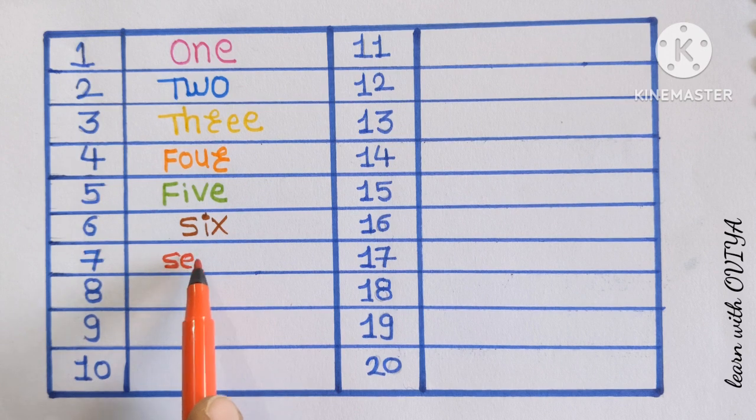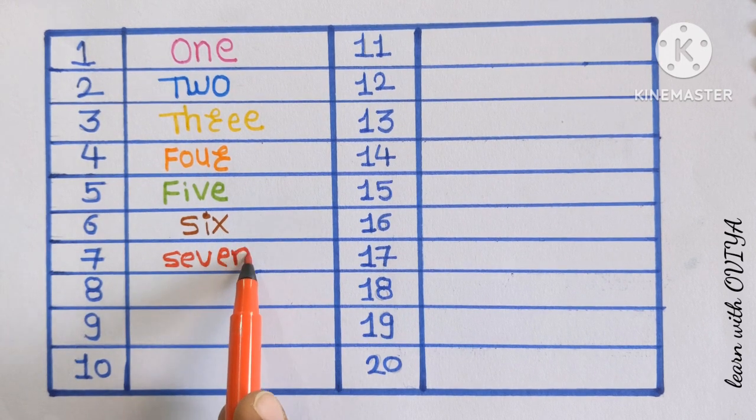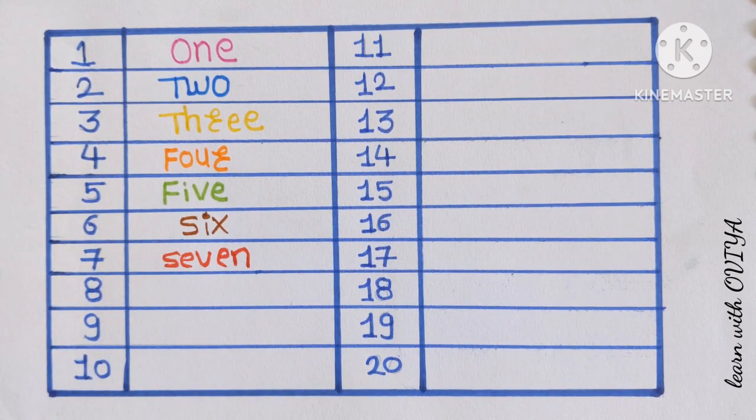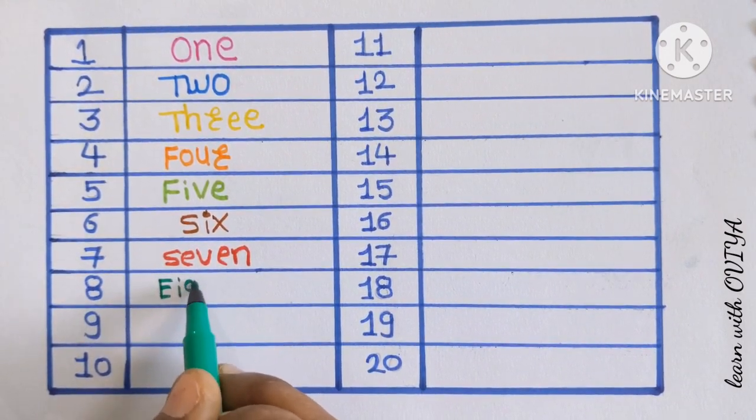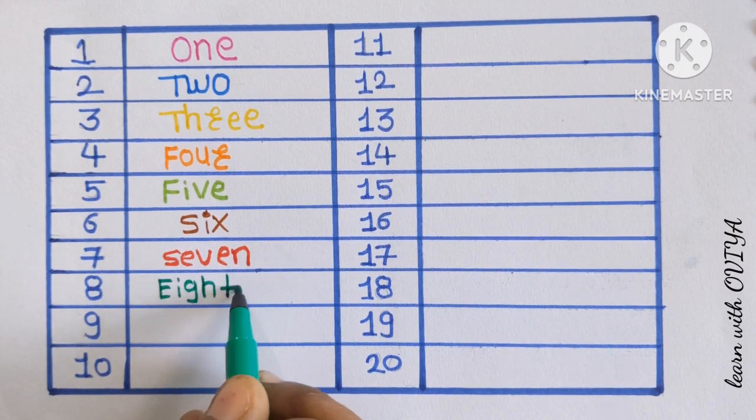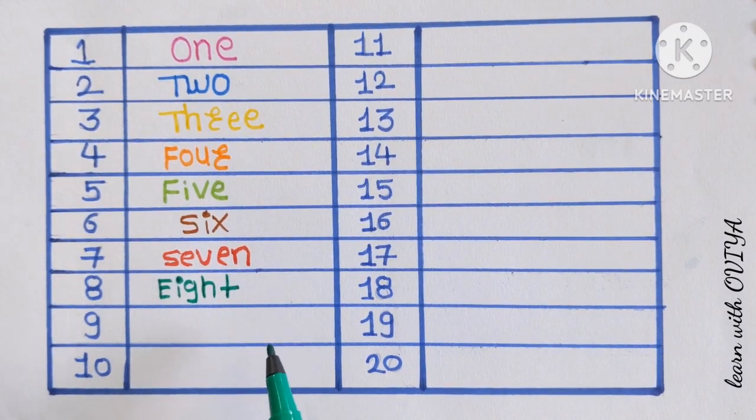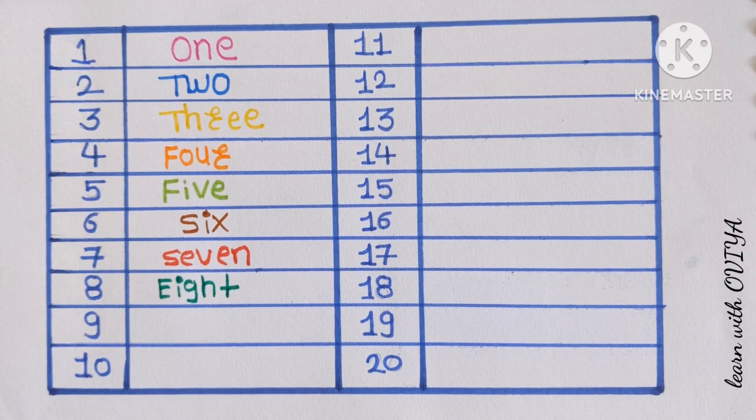Next number is 7. S-E-V-E-N. 7 with a red color. Number 8. E-I-G-H-T. Number 8 with a dark green color.